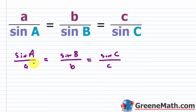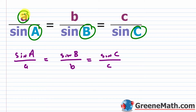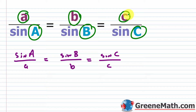Remember: in triangle ABC, capital letters A, B, C are the angles. The lowercase counterparts — lowercase a, b, c — are the sides opposite those angles. So lowercase a is the side opposite angle A, lowercase b is opposite angle B, and lowercase c is opposite angle C.